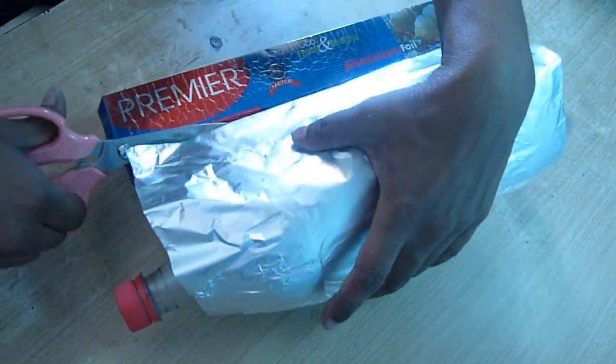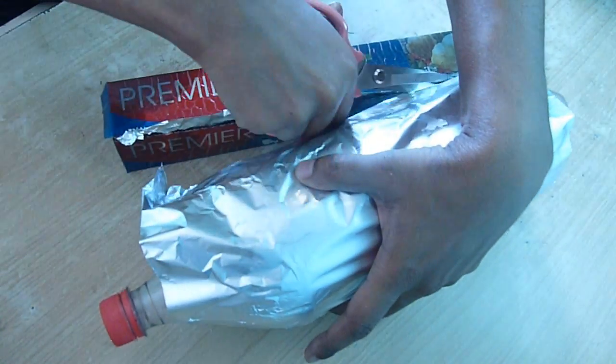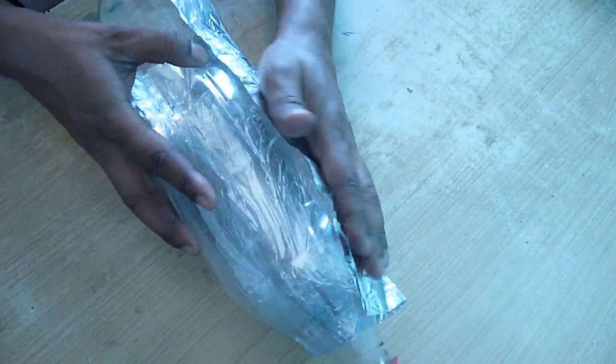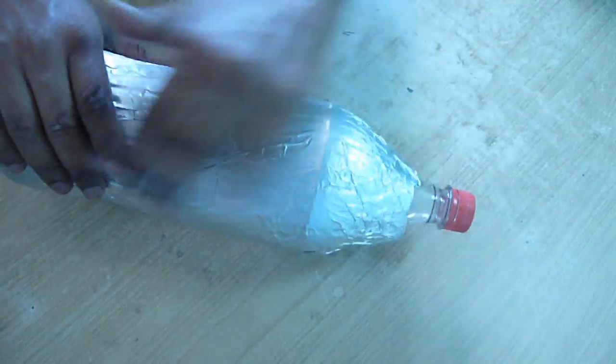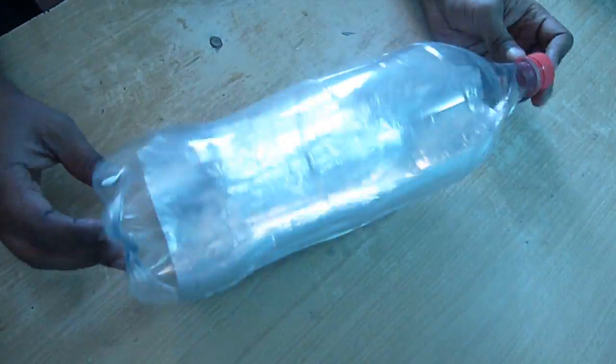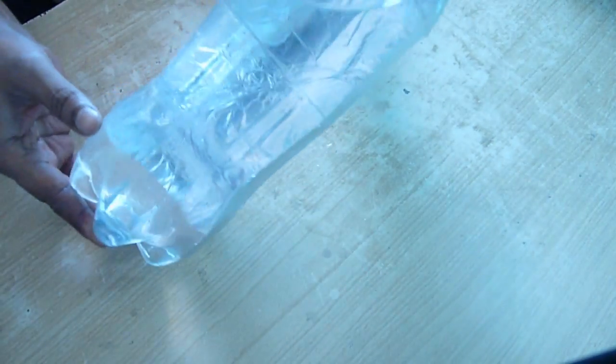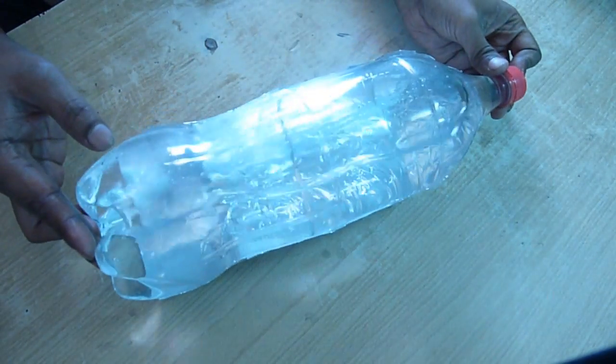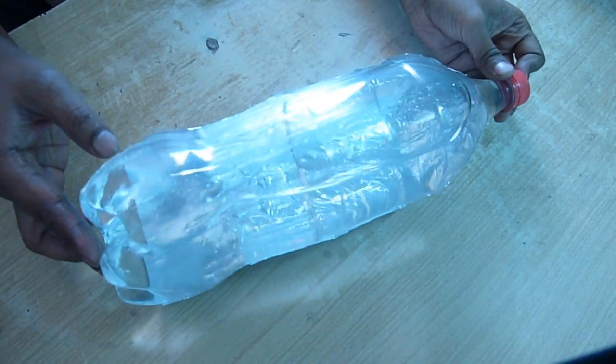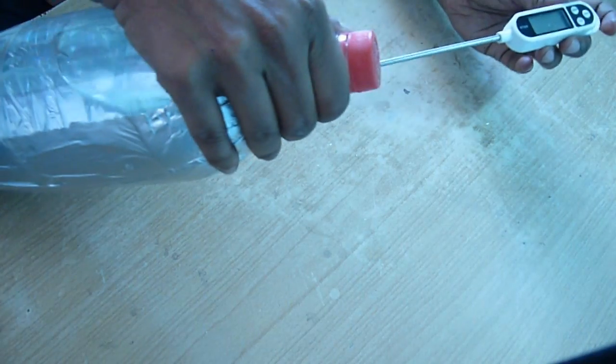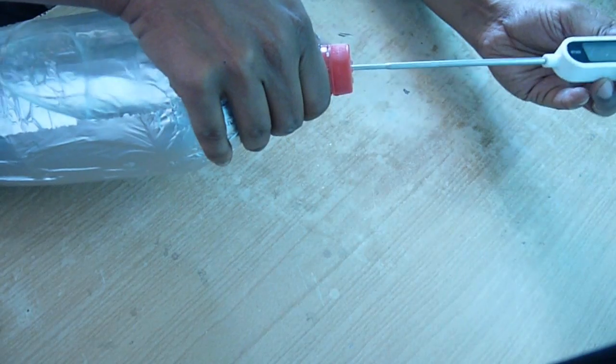This will be useful to reflect back the heat into the water. Now fill this bottle with water and we'll do an experiment to know how the solar energy can be used to heat this water. Let's see the temperature inside the home.